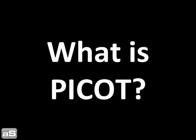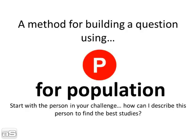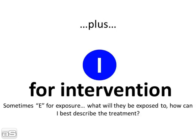What is PICO? It's a method for building a question. P is for population — start with the person in your challenge. Ask: how can I describe this person to find the best studies? I is for intervention, sometimes E for exposure — what will they be exposed to, and how can I best describe the treatment?